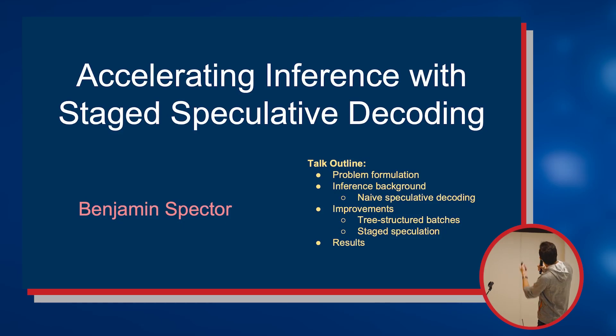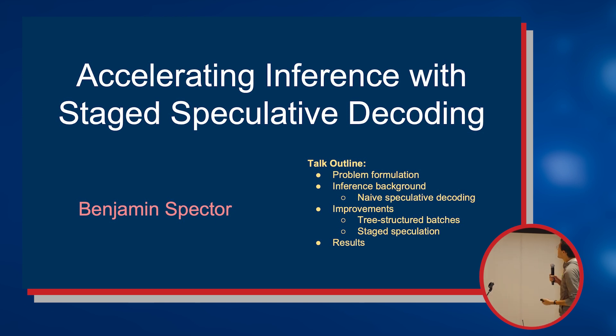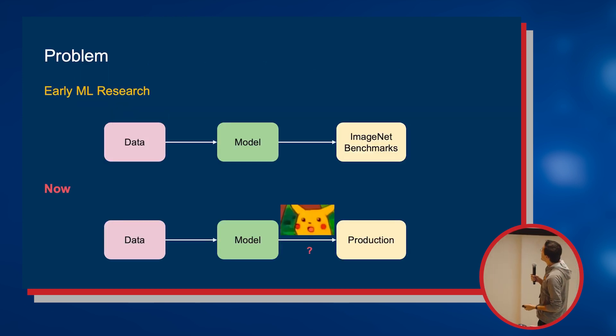So a very quick outline: we're going to do problem, background inference, some background, more background work, and then the things that I did that make this better, which we're going to cover extremely quickly, and the actual results. So let's start with the problem.